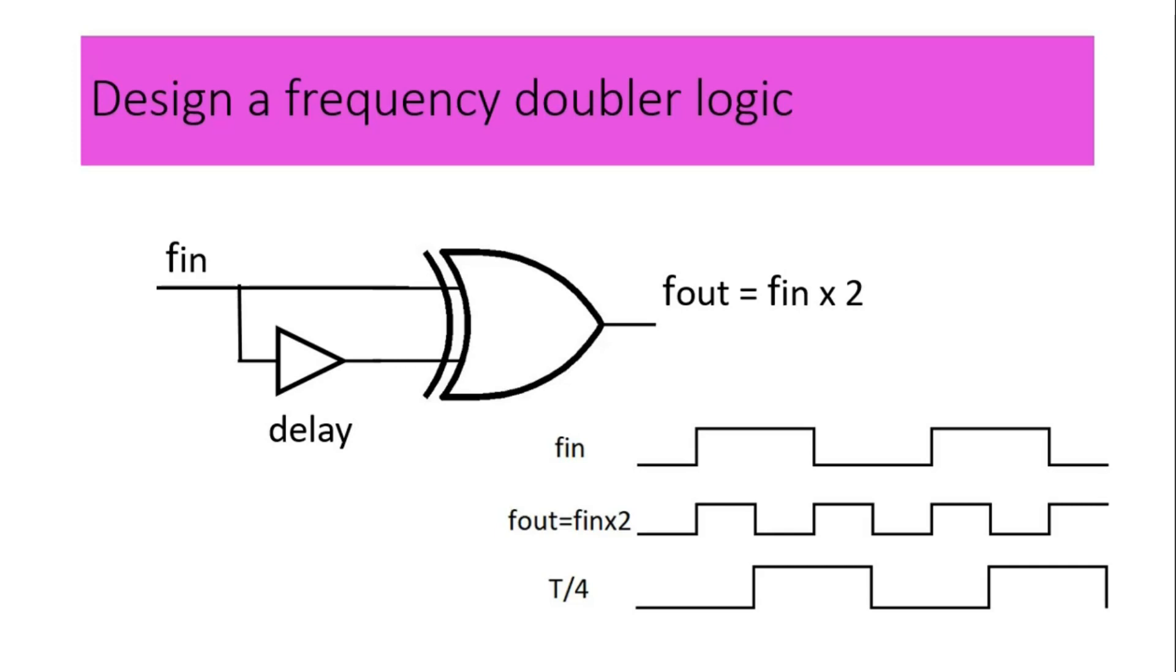Here PLL stands for phase lock loop and DLL stands for delay lock loop. These are very popular methods to multiply clock frequency by any number. Why this type of method is not popularly used because it is very difficult to control this delay very precisely.